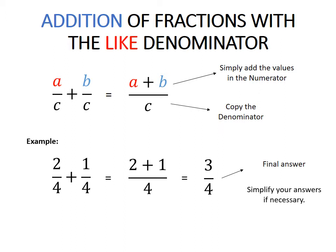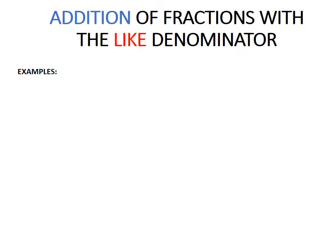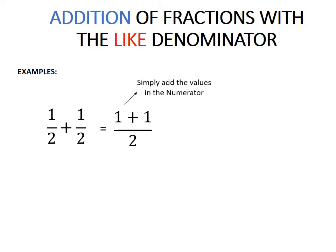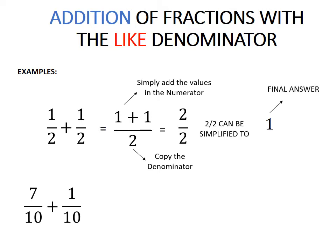But if you can simplify the answer, then please simplify your answer if necessary. Here's another example: 1 over 2 plus 1 over 2 equals 1 plus 1 over 2. Again, you simply add the values in the numerator and copy the denominator. So the answer would be 2 over 2. 2 over 2 can be simplified to 1, so 1 will be your final answer.